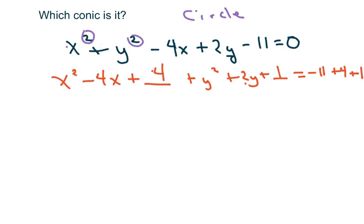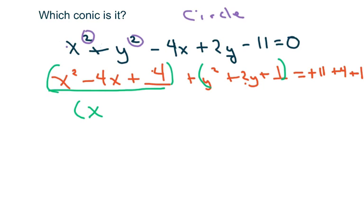This should be a plus here — did y'all catch that? Now we make our perfect square trinomials. We group them together: x minus 2 squared — since half of 4 is 2 — and y plus 1 squared — since half of 2 is 1. This gives us 16 on the right side.